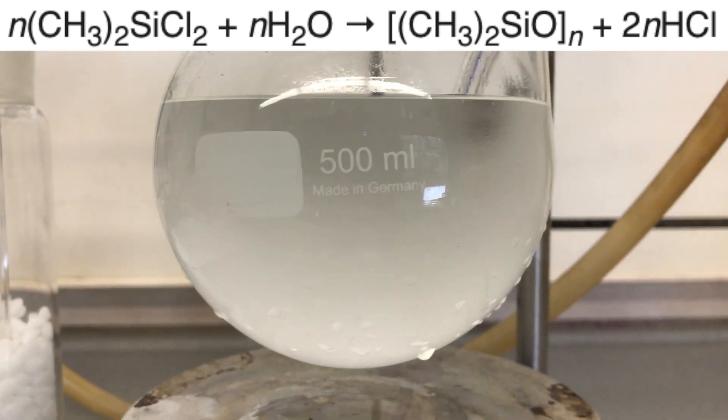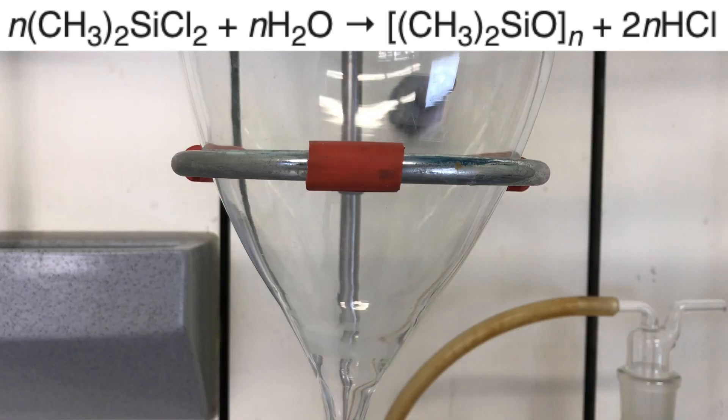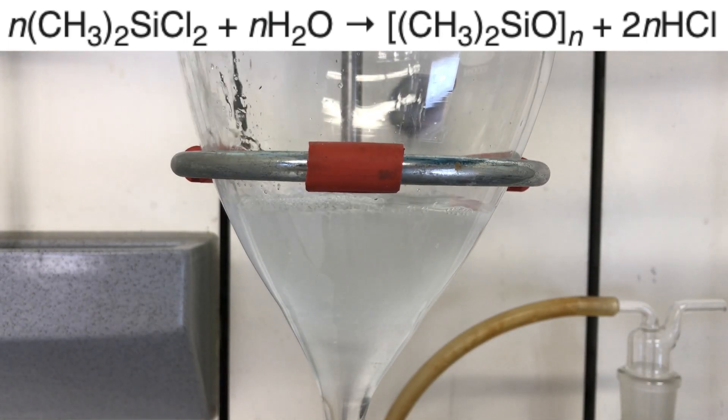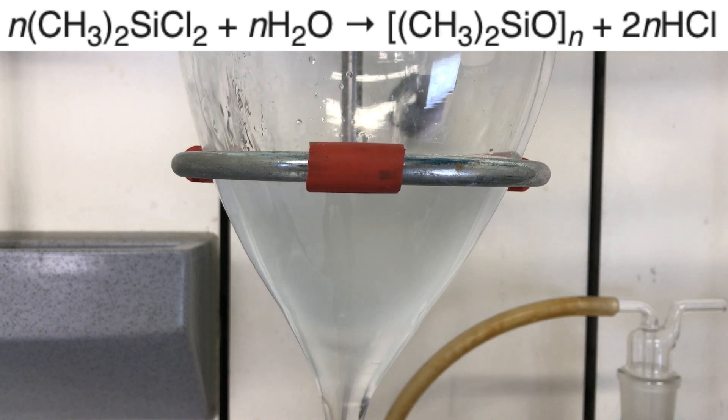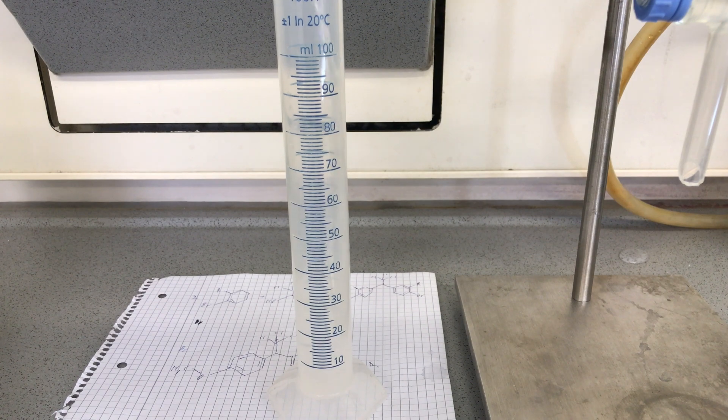The reaction taking place is quite simple. The dimethyl dichlorosilane reacts with water to form polysiloxanes and HCl. Some of the HCl dissolves in the water and dissociates to form hydrochloric acid. Once the reaction was finished, we were ready to take the next step.